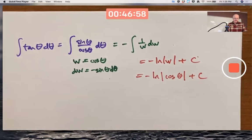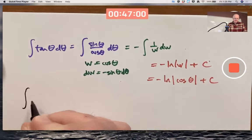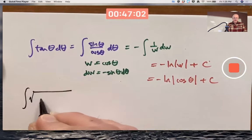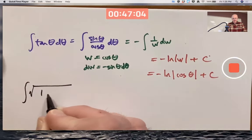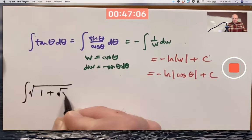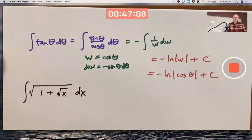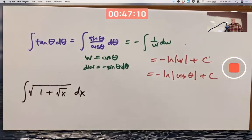Here's an even harder example, and this example is in the book. Integrate square root of 1 plus square root of x all under the bigger square root sign. Yikes.